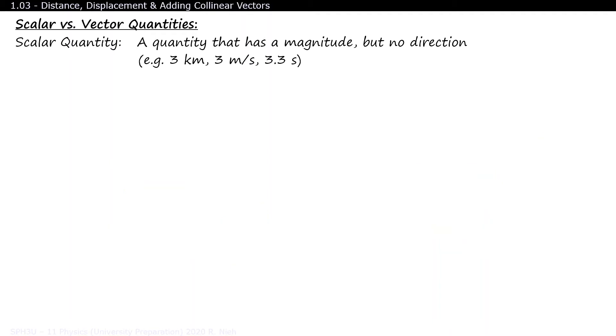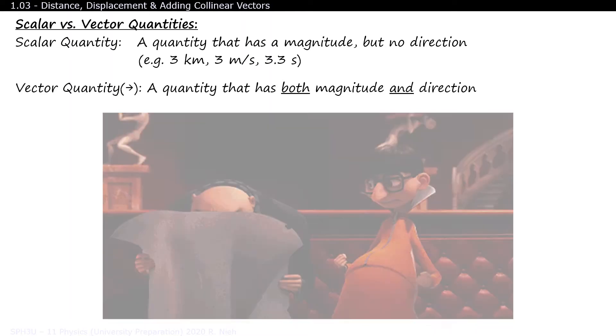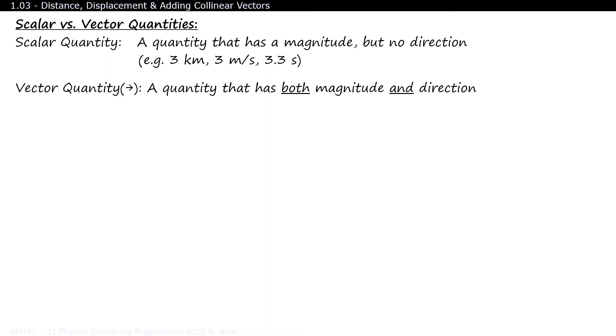A vector quantity is exactly like what this character says. It's a quantity with a measurement and direction. For example, I walk 3 kilometers west to get to school. You'll always see an arrow written on top of the symbol of a vector quantity.